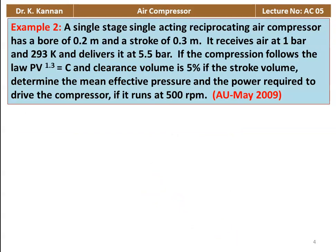Example number 2 from May 2009 question paper. A single stage, single acting reciprocating air compressor has a bore of 0.2 m and stroke length of 0.3 m. It receives air at 1 bar, 293 K and delivers it at 5.5 bar. Compression follows PV^1.3 = constant. Clearance volume is 5% of the stroke volume. Determine the mean effective pressure and the power required to drive the compressor if it runs at 500 RPM.